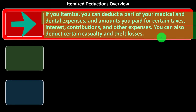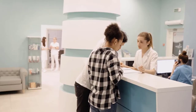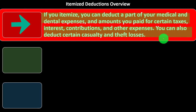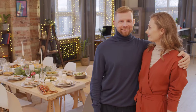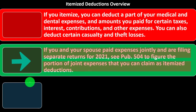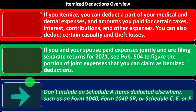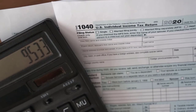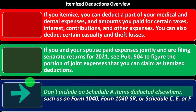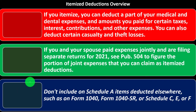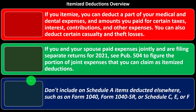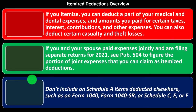Itemized deductions overview: if you itemize, you can deduct a part of your medical and dental expenses and amounts paid for certain taxes, interest, contributions, and other expenses. You can also deduct certain casualty and theft losses. Don't include on Schedule A items deducted elsewhere — such as on Form 1040, Schedule C, or Schedule F — because if you're already taking a deduction somewhere else, you can't also take that same deduction on Schedule A.